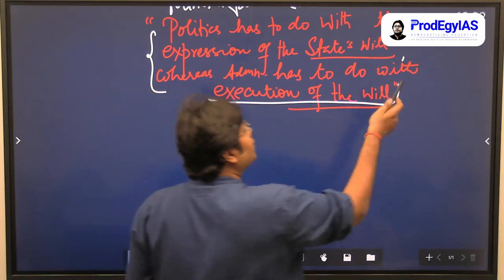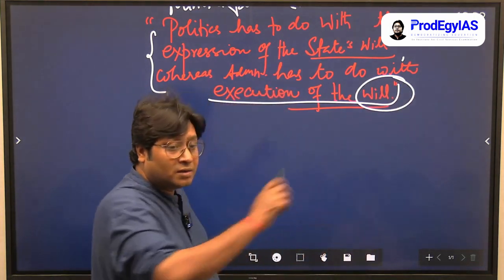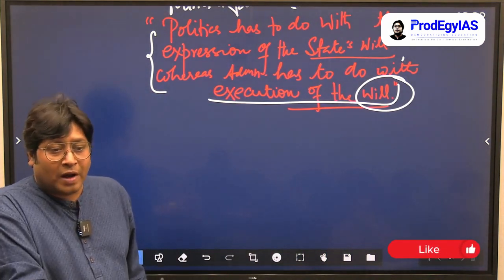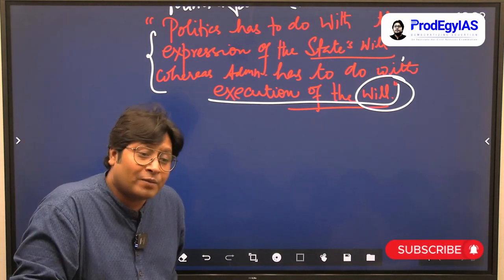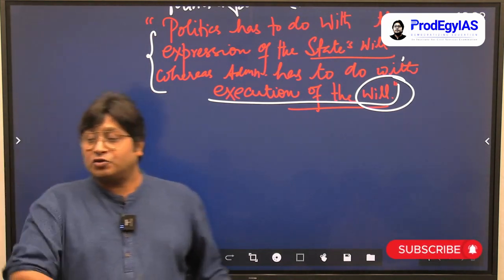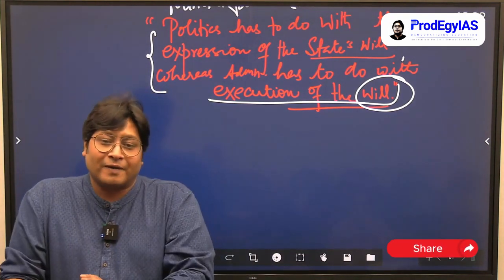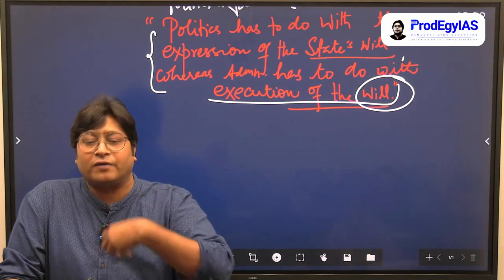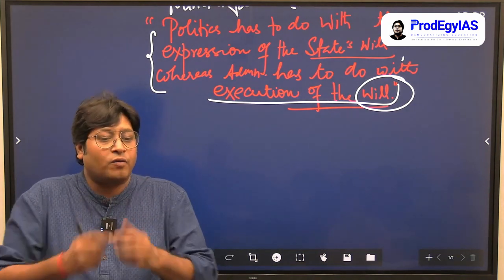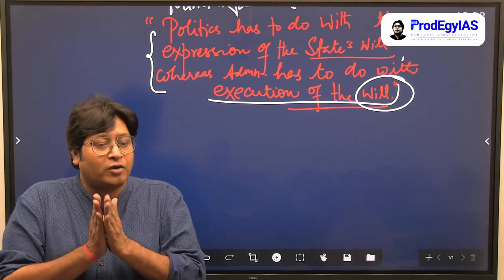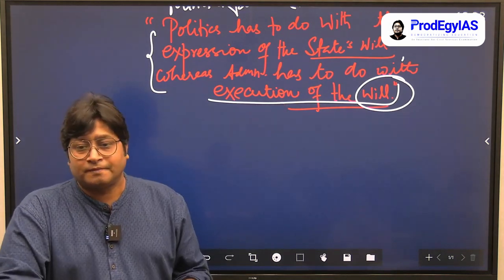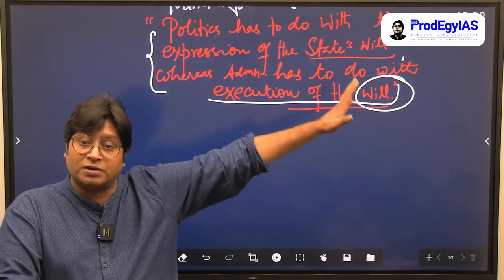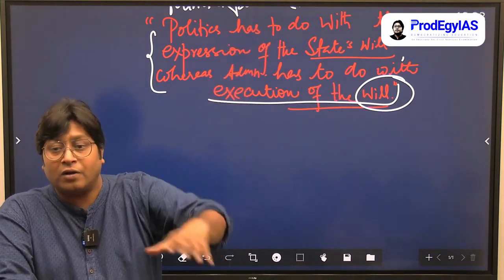Policy execution is the role of administration, but Goodnow wrote 'will.' Think of it this way: your aatma is the state, the voice of the aatma is politics, and whatever you did with your hands is administration. Your action by your body cannot be separated from what your aatma said, but still aatma and body are two different things. He clearly establishes that wherever the state's will is expressed, that is politics; wherever it is implemented, that is administration.